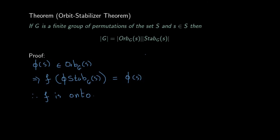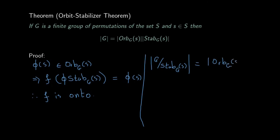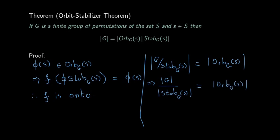This proves the orbit-stabilizer theorem. Since F is bijective, the number of elements in G / Stab(s) equals the number of elements in the orbit of s. But we know that |G / Stab(s)| = |G| / |Stab(s)|. Multiplying throughout by |Stab(s)|, we get the orbit-stabilizer theorem: |G| = |Orb(s)| · |Stab(s)|.